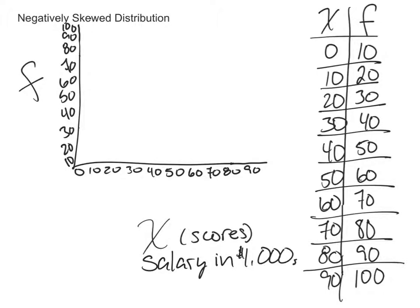In this video we're going to talk about negatively skewed distributions, which at first sounds like it's a bad thing, but actually could be a very good thing. In this case, with our scenario here, we're looking at our raw scores over here and our frequencies over here.